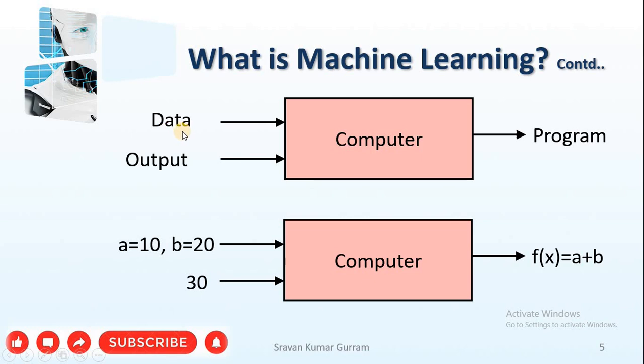See here, we are giving data and output to the computer. The computer can understand the data. Then that gives the program. This is a very important difference between traditional programming and machine learning. See the example. The data is 10 and 20, A equals 10, B equals 20. And the output is 30.